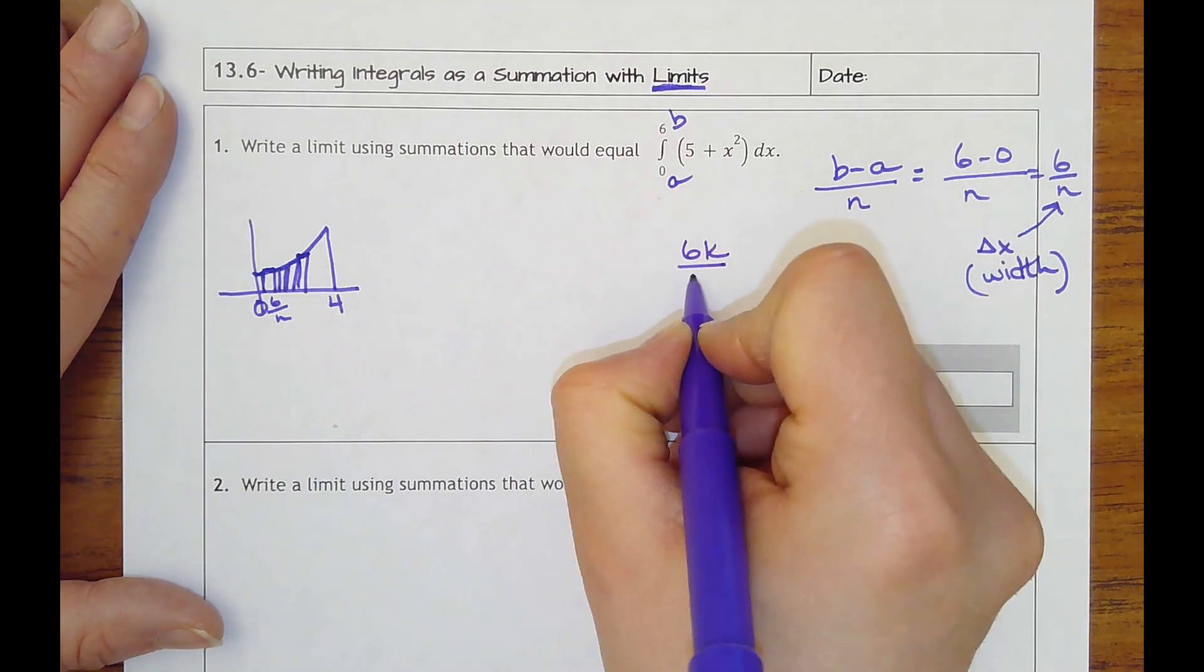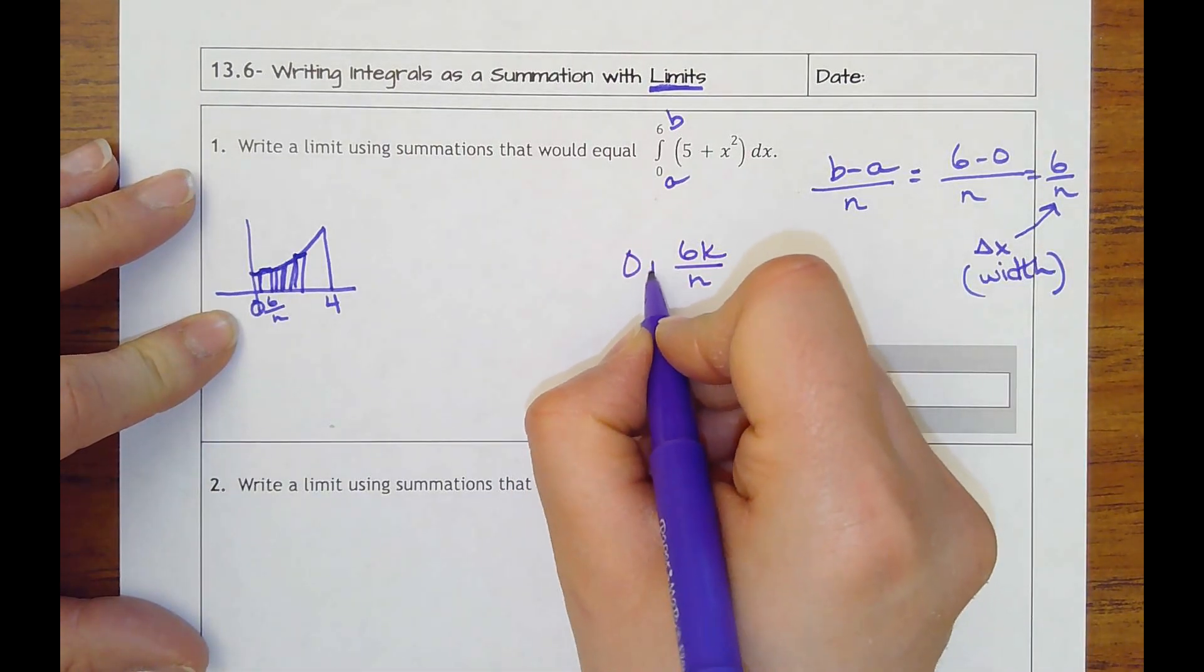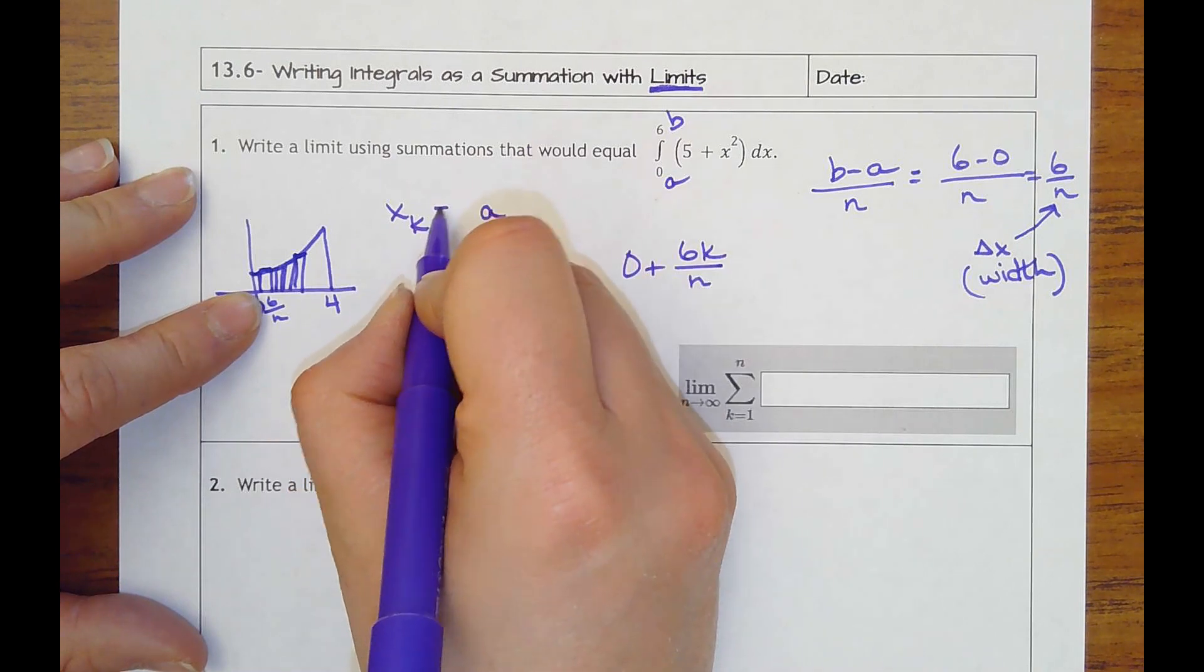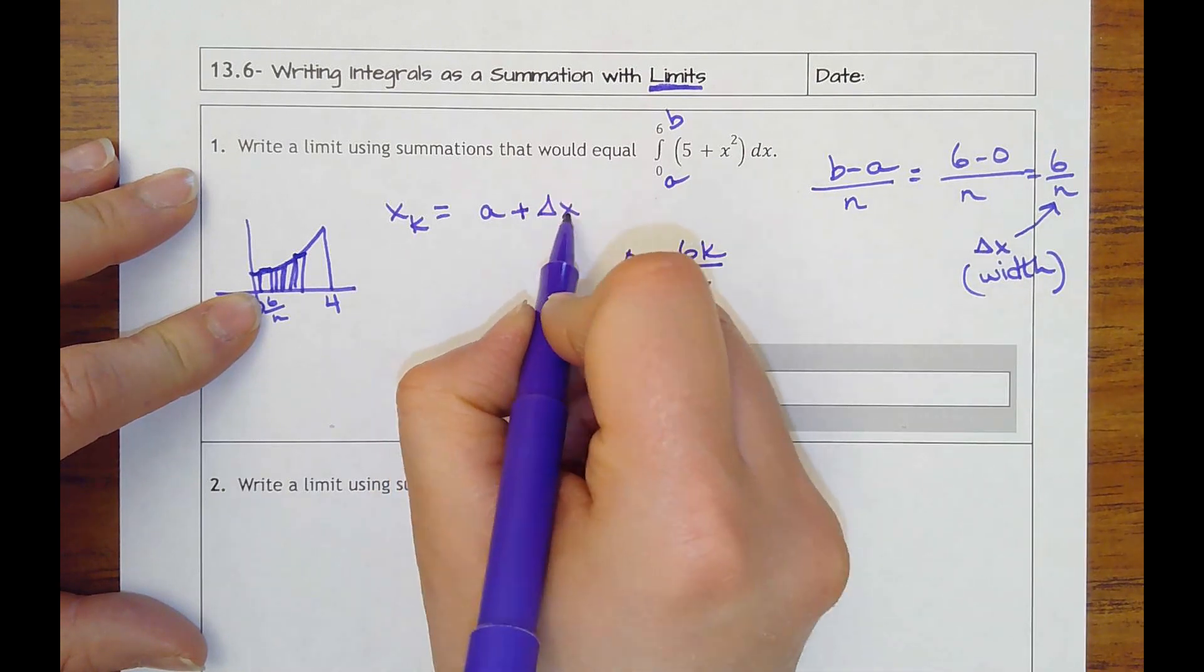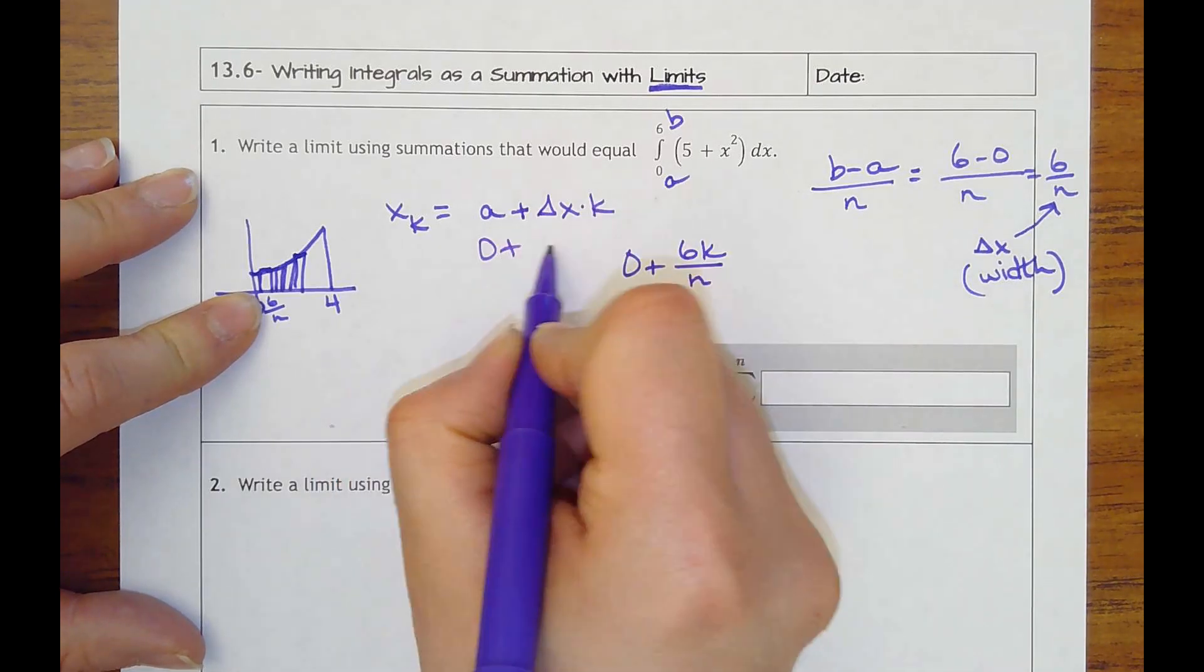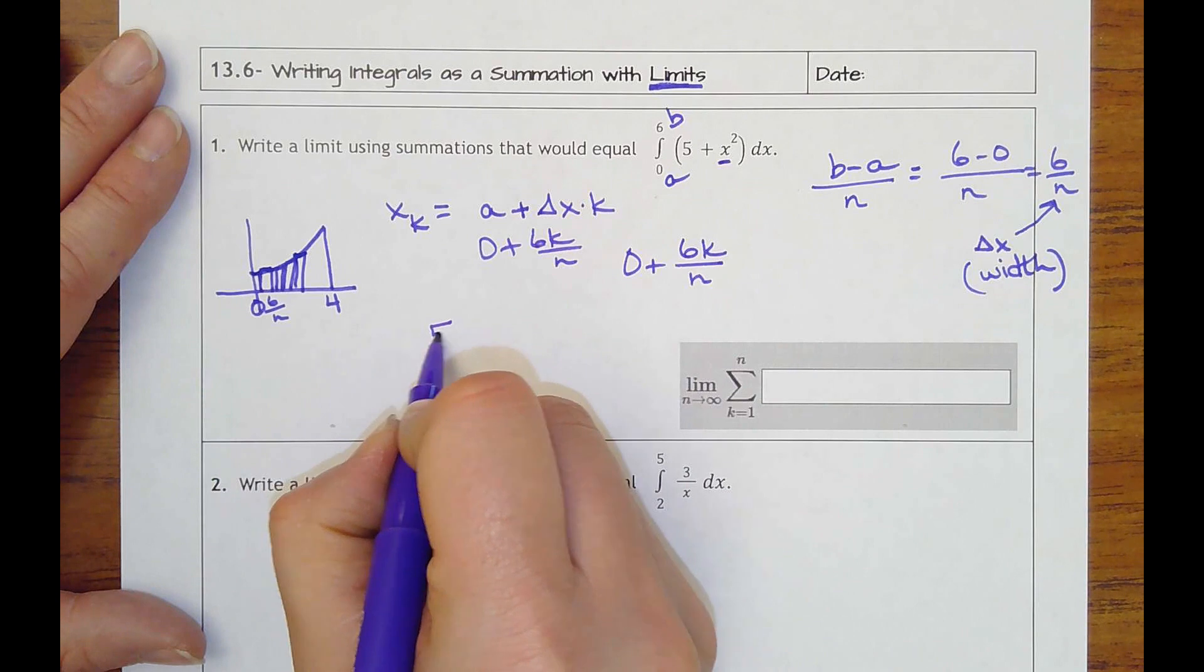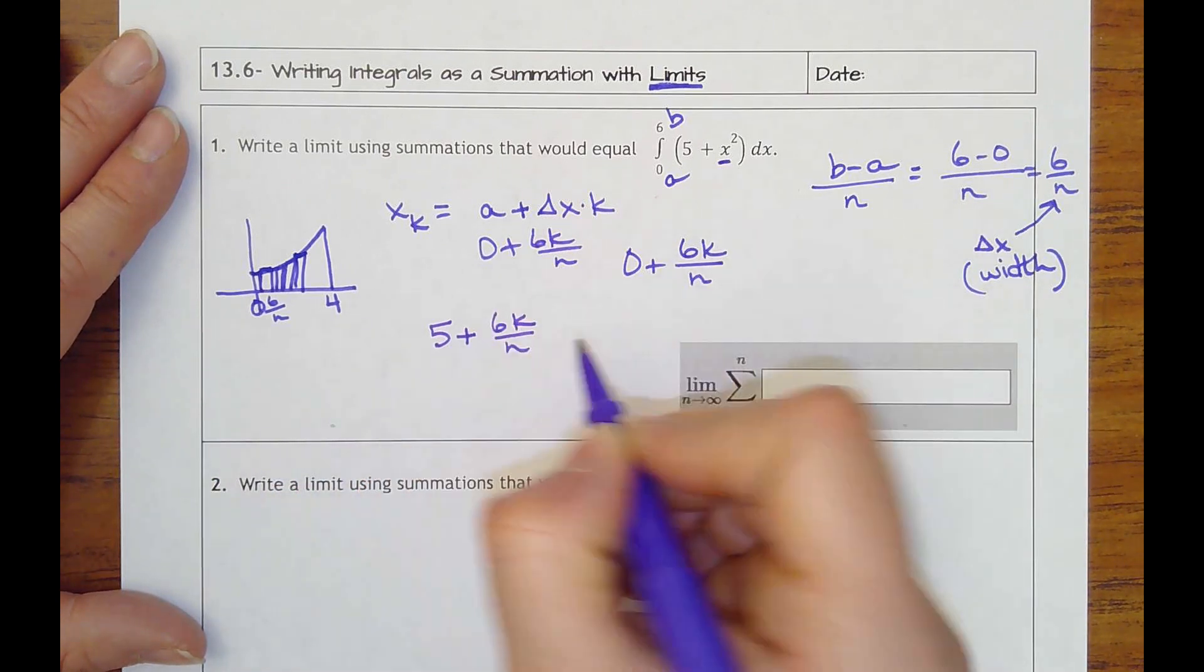Remember, then, that because I'm going to have multiple rectangles, I'm going to have that times k. So I would have 6 times k over n. And I'm starting at zero, so it's always your a value. So I'll put x sub k—x of any rectangle, any rectangle's x value is going to be a, your starting point, plus your delta x, your change in x, times k of those rectangles. And so we're going to have zero plus 6k over n. And you don't need the zero. Then what I'm doing is I'm going to plug that in for x into whatever function they give me. So that would be 5 plus 6k over n.